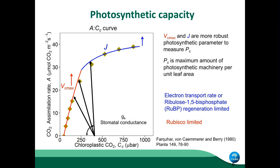To get more photosynthetic capacity — not just one point — usually we make an A/Ci curve, which means measuring different, increasing concentrations of CO2. If we give a little CO2 to the plant, it will take very little. Here is the assimilation of CO2. So as we increase CO2, the plant takes more. In the first part is Rubisco — it will be eating that CO2. Then it reaches a plateau, and the next limitation is J, the electron transport rate.